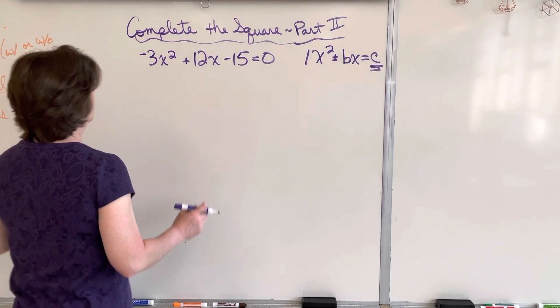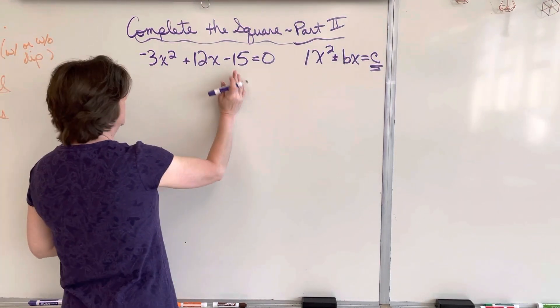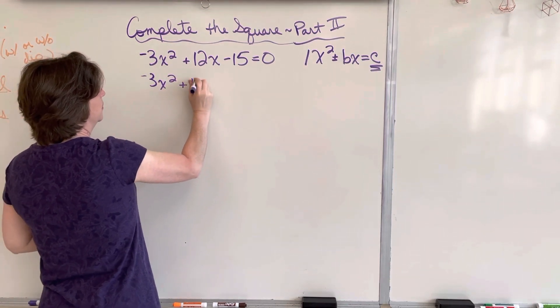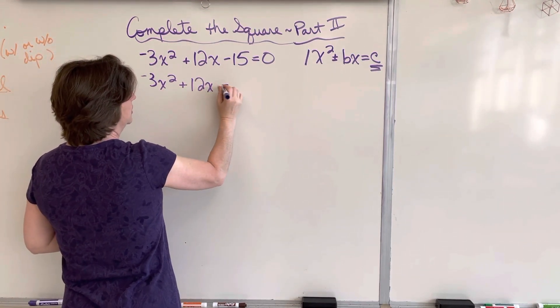The problem we have has a couple problems with it. First, our 15 is not in the right spot. So we're going to say negative 3x squared plus 12x, add 15 to both sides equals 15.